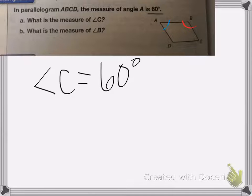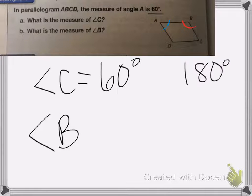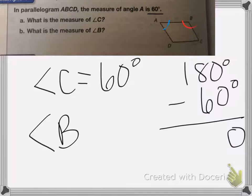So to find angle B, we're going to do 180 minus the 60 degrees I know angle A is. So 8 minus 6 is 2, bring down the 1. So angle B is equal to 120 degrees.